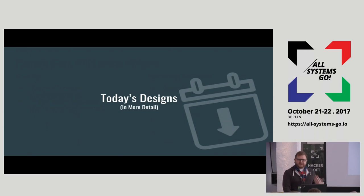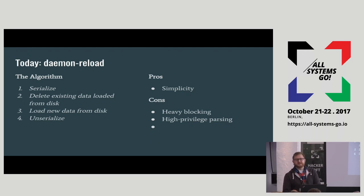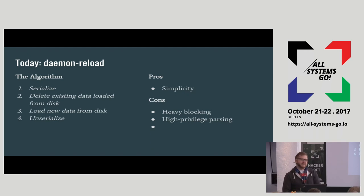To go over what happens today in a little more detail than just 'tear down the world and rebuild the world': for daemon reload, it basically serializes the runtime state, deletes the data loaded from disk, reloads that data from disk, and then un-serializes it. As a convention, anything in italics is blocking — it blocks the main event loop in the sense that nothing else is getting done while that is happening. Generally most of them are not amortized in any way with a particularly bounded time for blocking the loop; each of these operations will just take as long as they take.